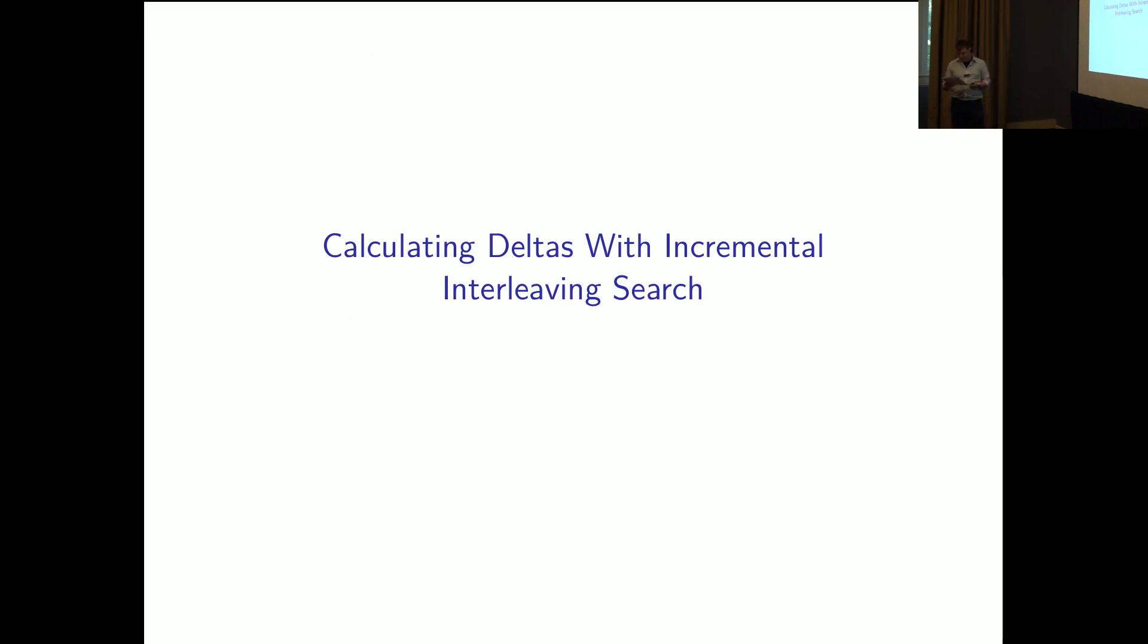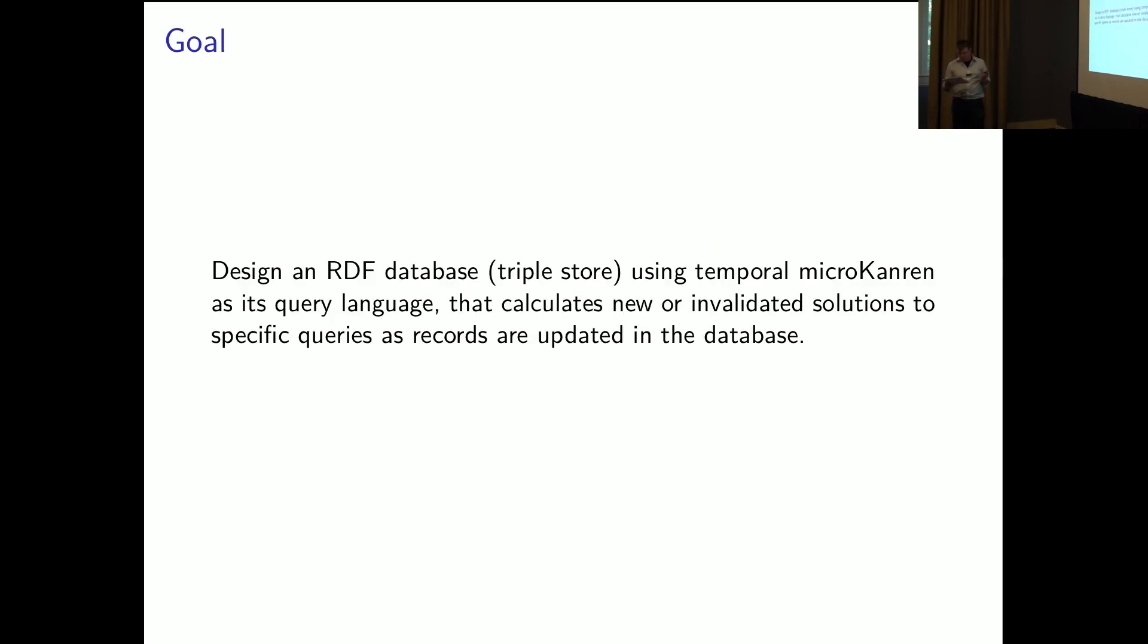So, the actual application. The primitive next can be used to implement a simple data store with temporally aware incremental search. We begin by describing the implementation, then present the full code. So, our goal is to design an RDF database, or a triple store, using temporal micro-Kanren as the query language. That should calculate new or invalidated solutions to specific queries as records are updated in the database. That next construct, together with a simple system of incremental indices, will allow us to store a search position for a query, and running a query will return both the current results and a delayed stream that, when we advance it, will continue searching the current tree's leaves.